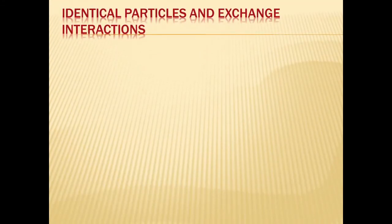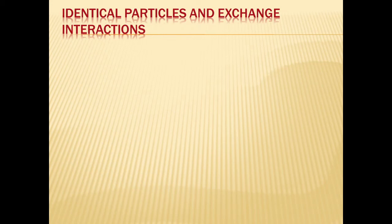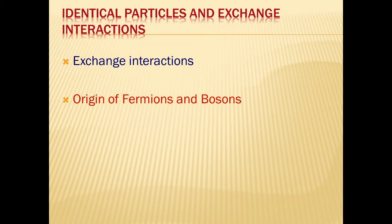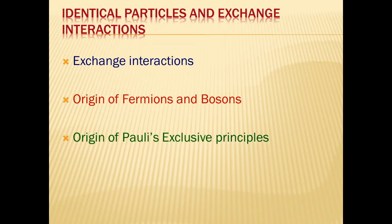The last unit is on Identical Particles and Exchange Interactions — the most important chapter. You may have wondered why there is a distinction between fermions and bosons, and what the basis for this distinction is. Also, since your 12th standard you have been learning the Pauli exclusion principle without understanding its basis. In this unit, we will study exchange interactions and from that you will be able to answer the origin of fermions and bosons, and why the Pauli exclusion principle exists and applies only to fermions.